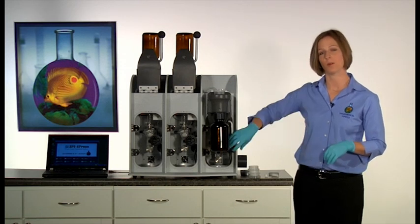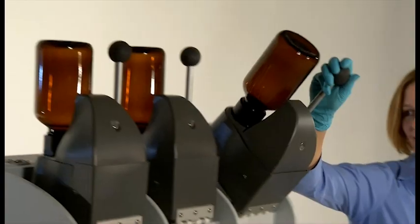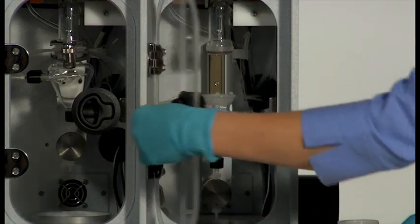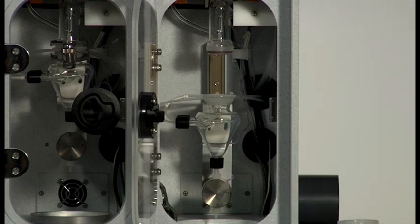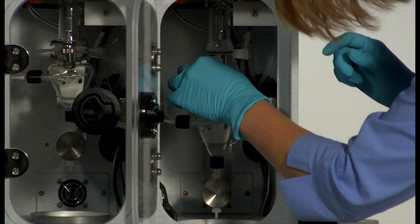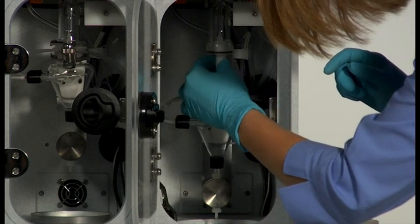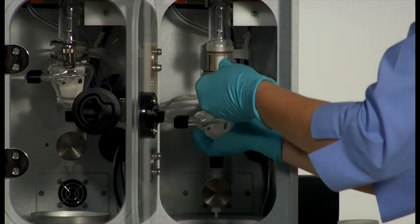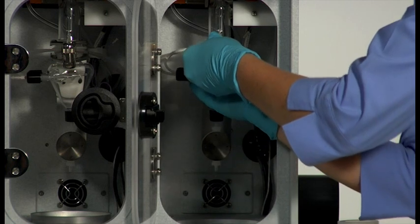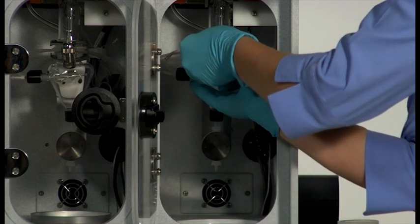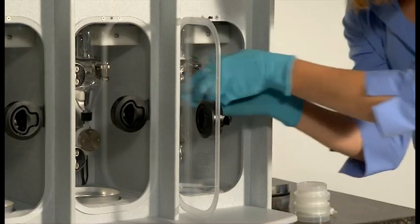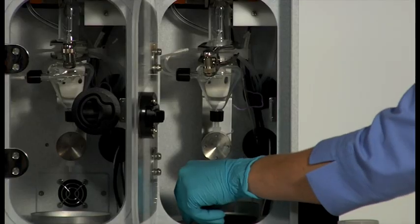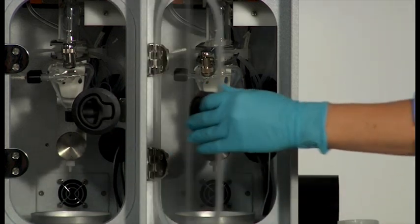Next, raise the sample bottle until it clicks into place. Open the door to the elution chamber and insert a sodium sulfate drying cartridge. Now raise the lower chamber and clamp it into place. Next, insert a pre-weighed aluminum weighing dish and close the chamber door.